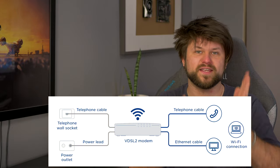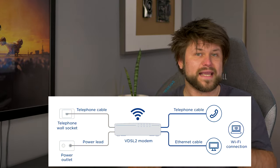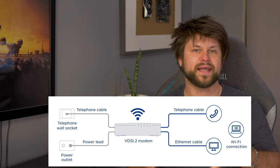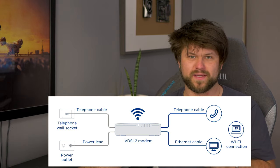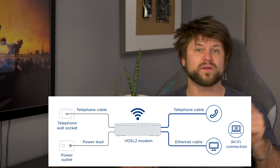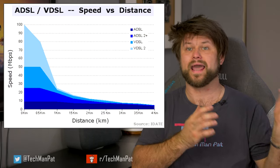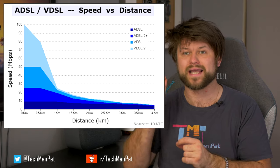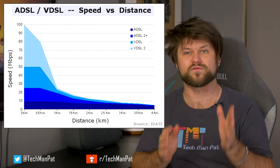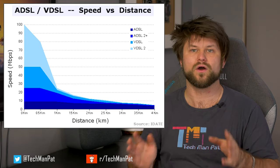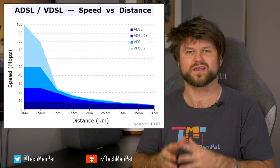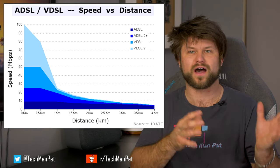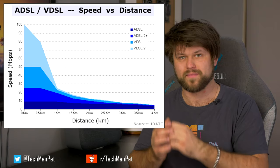VDSL2 — in your NBN fiber to the node modem you will see VDSL2. VDSL1 also exists; VDSL stands for very high speed digital subscriber line. It is a DSL technology that provides data transmissions faster than ADSL. VDSL offers speeds of up to 52 megabits downstream and 60 megabits upstream over a single flat untwisted or twisted pair of copper wires, using the frequency band from 25 kilohertz to 12 megahertz.